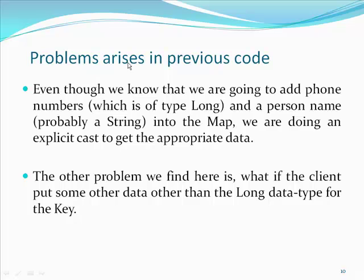Here is the problem that arises in the previous code. We find two major disadvantages in the older code compiled with a Java 1.5 compiler or before. The first is the need to have explicit casts spread across the code. The other is that there is no procedural mechanism through which we can prevent the wrong data type being added to the collection.